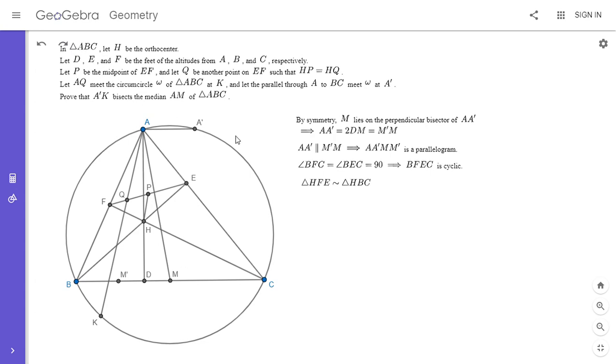So first, I'm going to state what I just mentioned. So triangle HFE is similar to triangle HBC. That's very easy to see. It's easy to show that the angles are equal because angle FEB is equal to angle FCB. And angle EFC is equal to angle EBC. Okay, so this is a well-known fact.